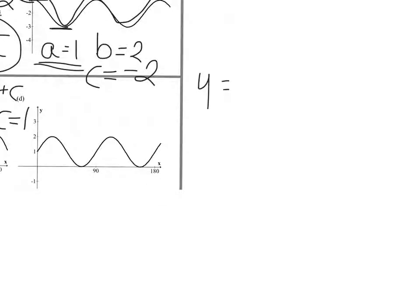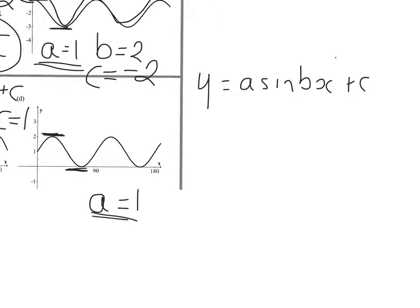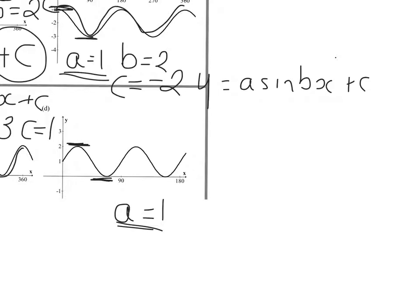This one is Y equals A sin Bx plus C. The curve goes up to 2 and down to 0. That's a total height of 2. Half that gives the amplitude, which is 1. There are 2 complete curves in 180 degrees, so that's 4 complete curves in 360 — B is equal to 4. The amplitude is 1, so the curve should go up to 1, but it goes up to 2. So it's been moved up 1 unit, and C is equal to 1.